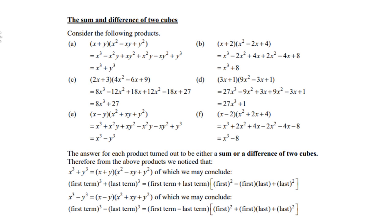Let's look at the product (x + y)(x² - xy + y²). If I multiply out with x + y, I get x³ - x²y + xy² + x²y - xy² + y³. Then if I collect my like terms, I end up with x³ + y³.